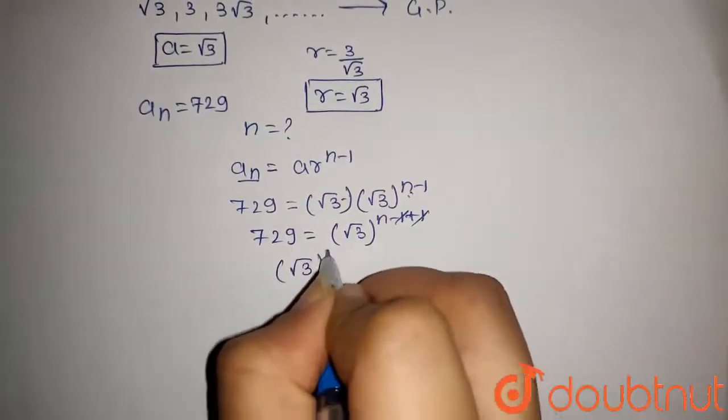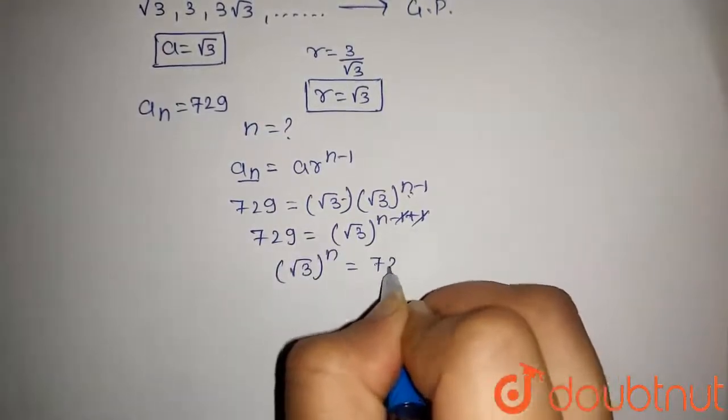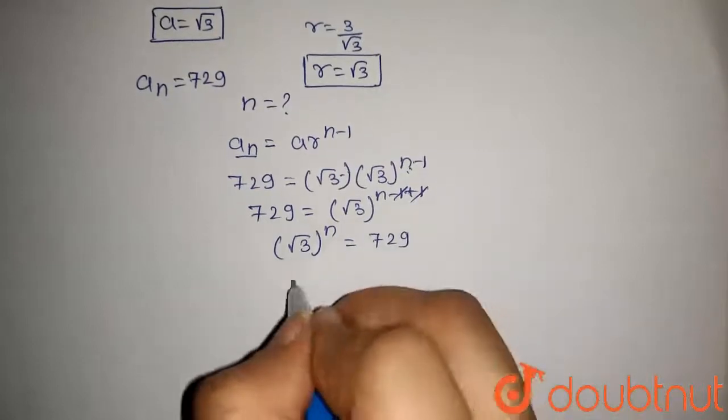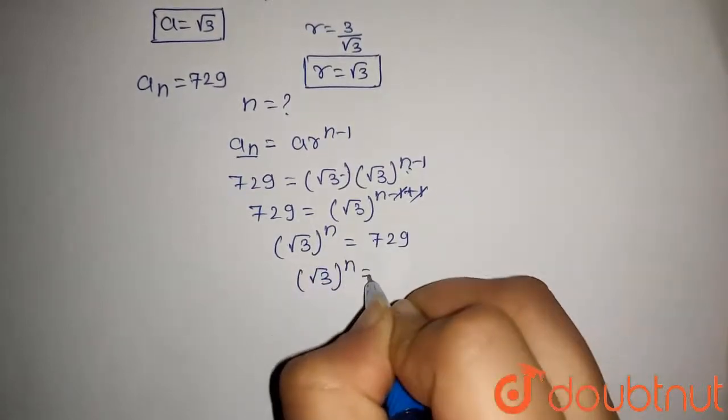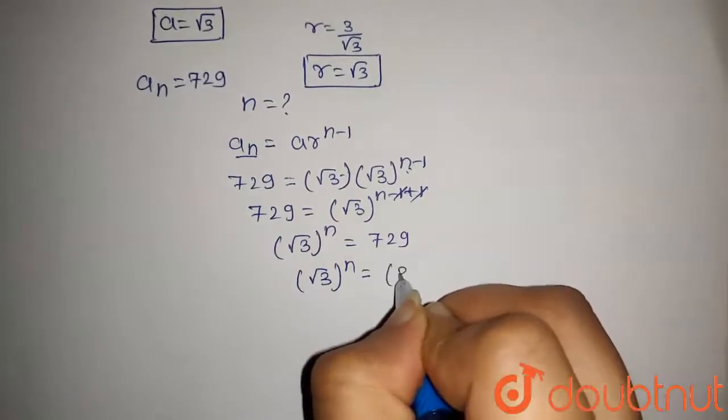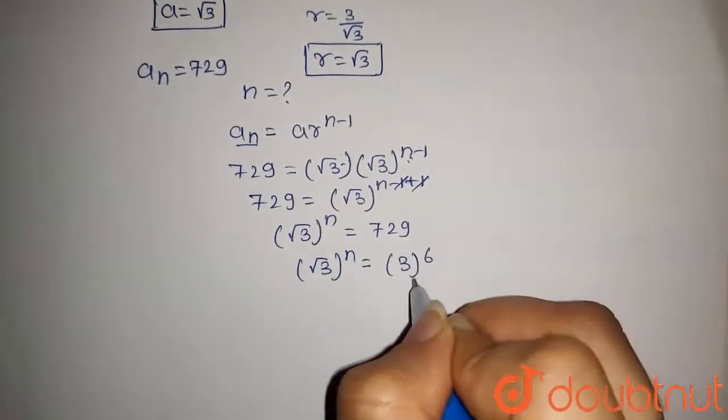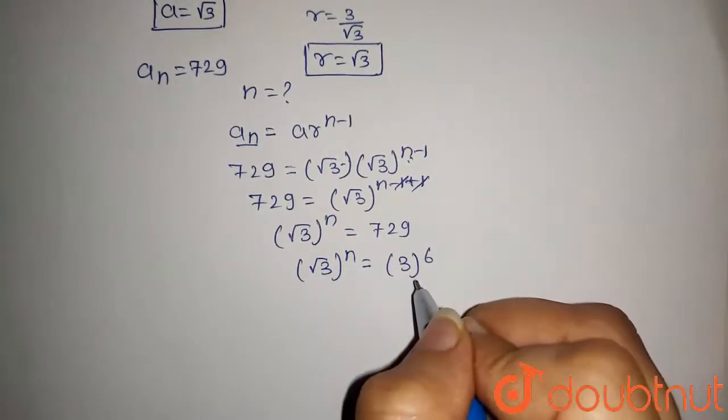We get (√3)^n = 729. Now, this 729 can be written as 3^6 and 3 can be written as (√3)².